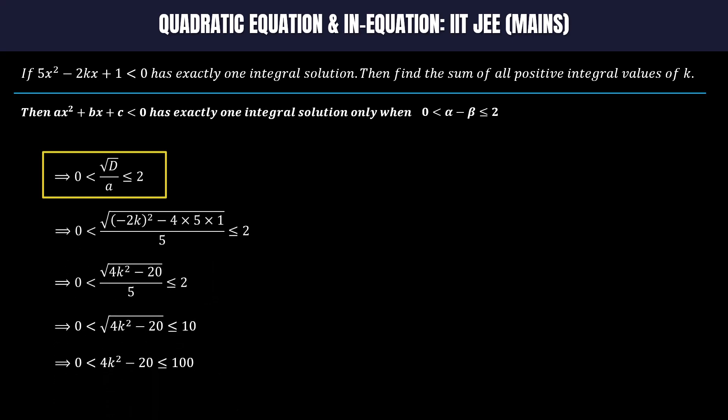By substituting the corresponding values, we get k² is greater than 5 and less than or equal to 30. Since k is an integer, therefore k² is a perfect square number. Hence, 3, 4, and 5 are the values of k.